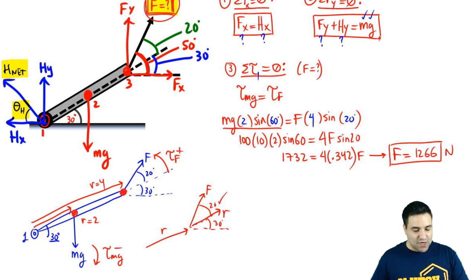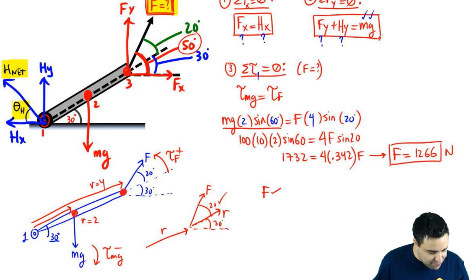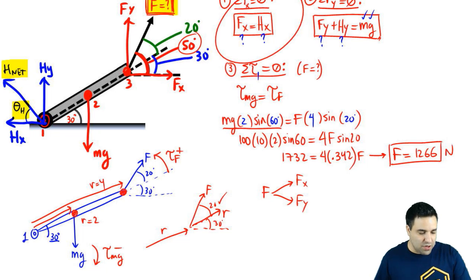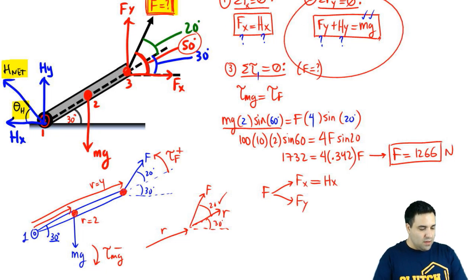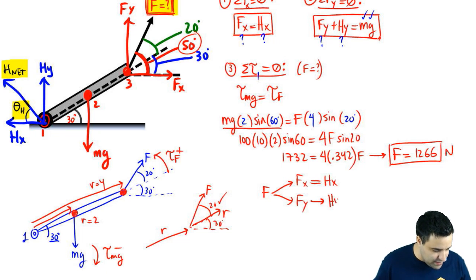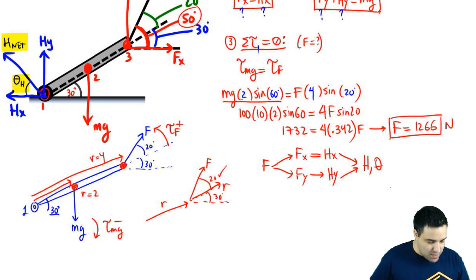Now check it out. Now that I know F, because I know the angle for F, the angle for F is 50, I can find Fx and Fy. So from F, this is the path, I can find Fx and Fy. Now notice here that if I have Fx, I know Hx. So it's actually the same number. And if I know Fy, I can find Hy using that equation. So I can get to Hy. And once I know both of these guys, I can get to H and the angle. So that's what we're going to do.